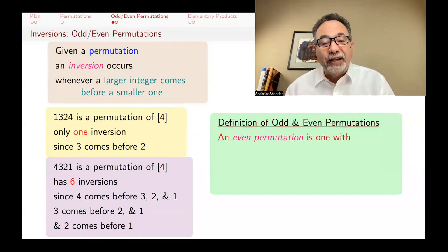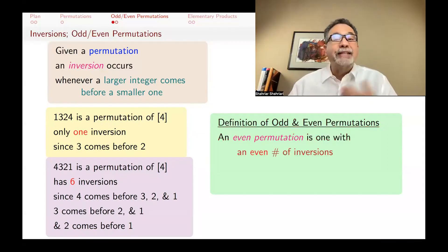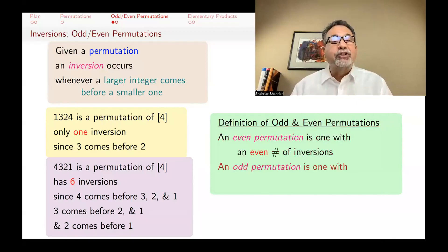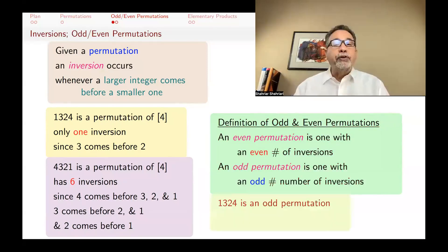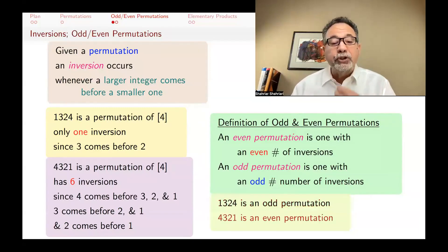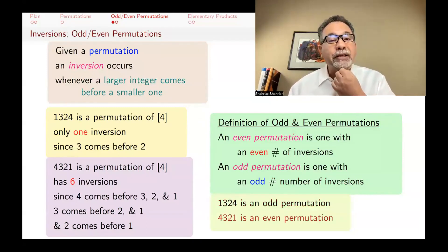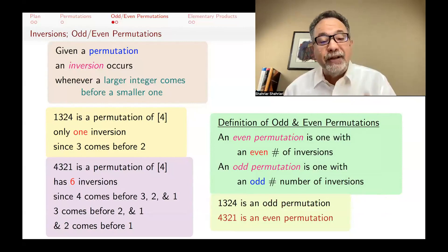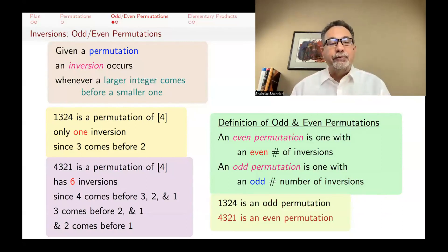Based on the number of inversions, we split permutations into two subsets: even permutations and odd permutations. A permutation is even if it has an even number of inversions, and odd if it has an odd number. For example, (1,3,2,4) has one inversion, so it's an odd permutation. (4,3,2,1) has six inversions — six is even — so it's an even permutation.